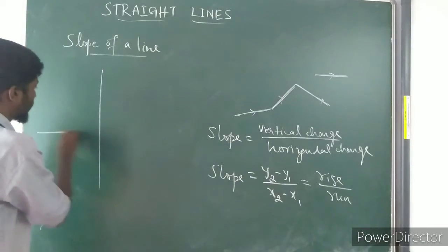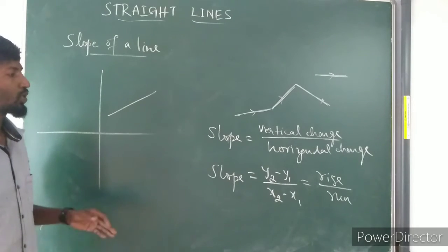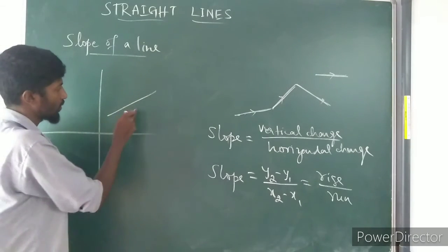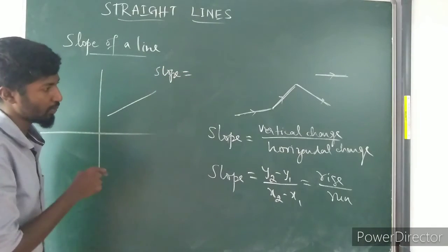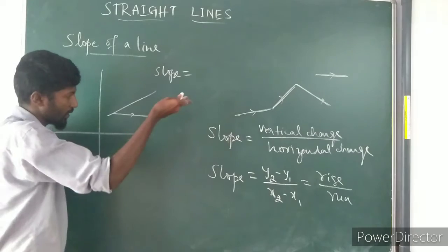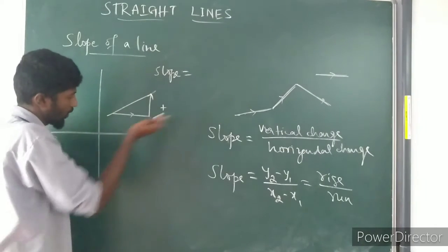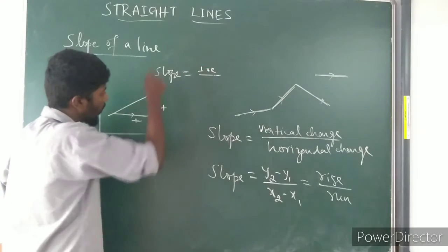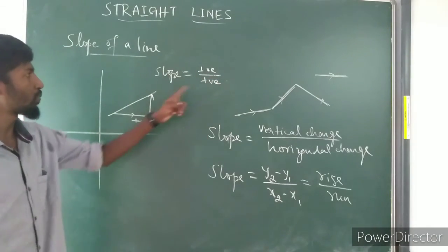Now in this coordinate plane, if I take a line and want to find its slope, slope is the ratio of vertical change to horizontal change. Here, if the line is going in the right direction and upward, moving upward is positive and moving right is also positive. So both the vertical change and the horizontal change are positive. Therefore, slope will be a positive value.